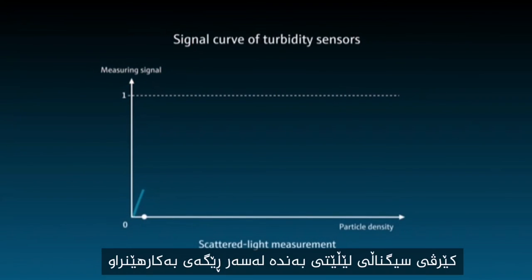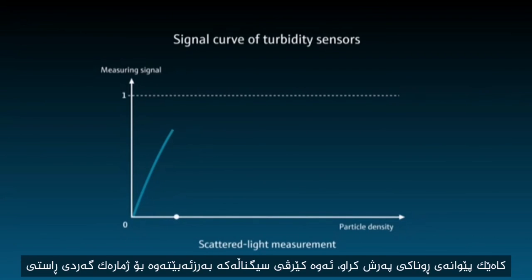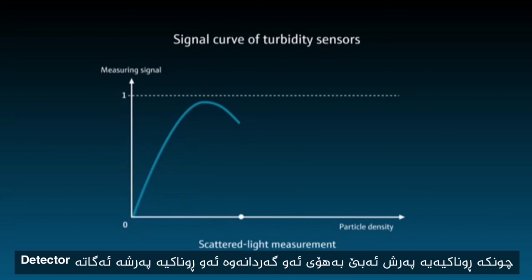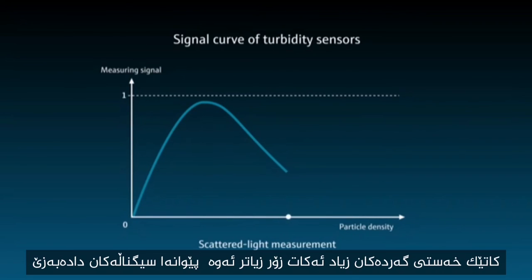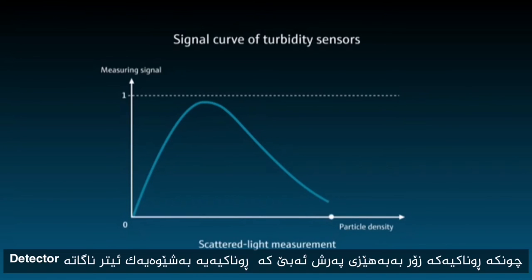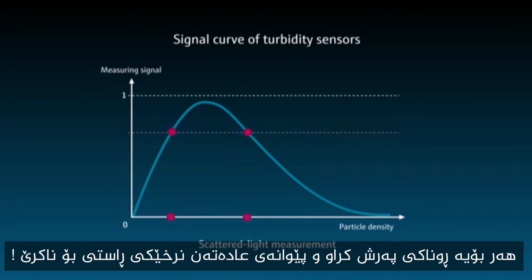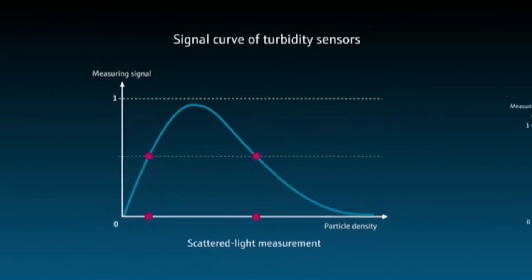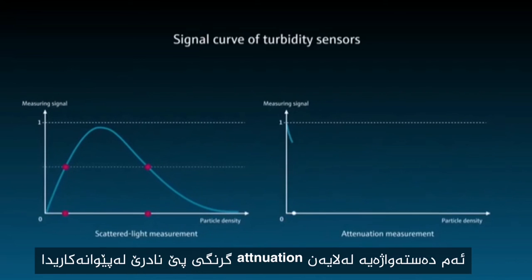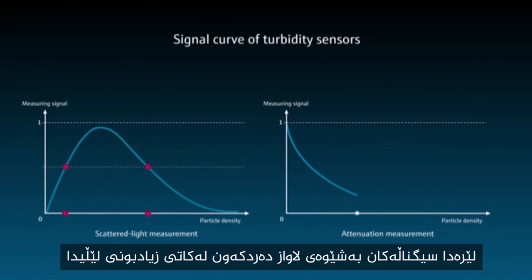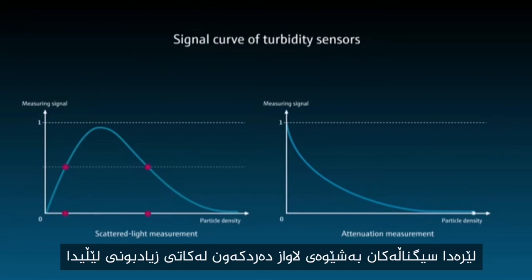The signal curve of turbidity sensors depends on the method used. When using scattered light measurement, the signal curve rises up to a certain particle density because the light is scattered towards the detector. When the particle density increases further, the measuring signal weakens again because the light is scattered so strongly that the radiation no longer reaches the detector. That's why scattered light measurement does not always deliver clear results. This phenomenon does not occur with attenuation measurement — here the signal consistently weakens with increasing turbidity.